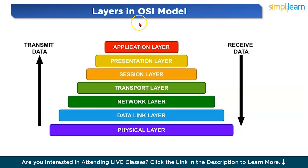The OSI model — Open Systems Interconnection model — is a conceptual framework that standardizes communication between devices by dividing it into seven layers. The Physical Layer defines hardware connections, signal transmission, and bitrate control. The Data Link Layer ensures error-free transmission and organizes data into frames. The Network Layer routes data packets across the network. The Transport Layer manages flow control, error correction, and delivery sequence. The Session Layer establishes, maintains, and terminates communication sessions. The Presentation Layer translates, encrypts, and compresses data. The Application Layer interfaces with user applications like web browsers and email.